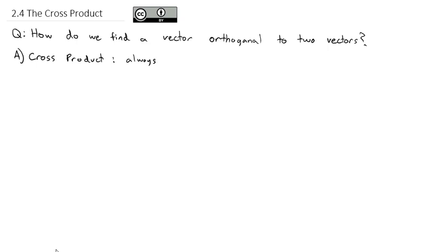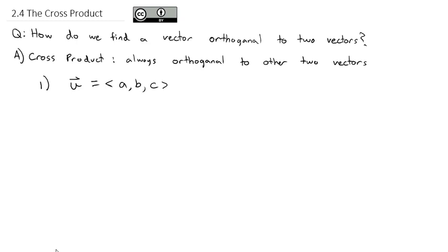The result is always orthogonal to the other two vectors. And unlike the dot product, the cross product only works in three dimensions. So let's say I've got a vector u with component form a, b, c, and another vector v with component form d, e, f.